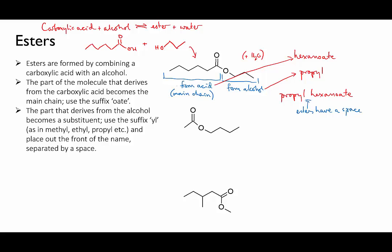How about this second one? First, identify the main chain. That's the bit on the carbonyl side here. And it has two carbons. Don't forget the carbon that's part of the carbonyl. So we'll call that part ethanoate.